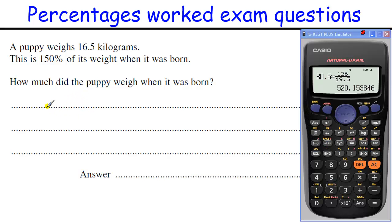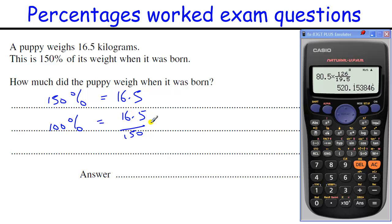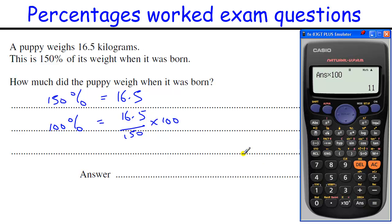Puppy weighs 16.5 kilograms, and this is 150% of its original weight. So if 150% equals 16.5 kilograms, we want to find its original weight when it was born, which would be 100%. We need to do 16.5 divided by 150 to find 1%, then times by 100 gives you 100%. Without a calculator you could divide by 3 to get 50%, then times by 2 to get 100%. But as we've got a calculator, we just use the numbers given.